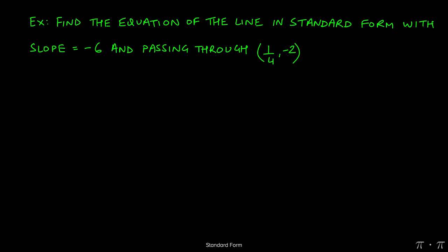Like we did in the previous example, we can start by using the point-slope form. Remember, if you're trying to find the equation of a line in standard form, you can never start with standard form directly. You have to start with something else. Point-slope form is the easiest one to start with, especially if we're given a point and a slope.